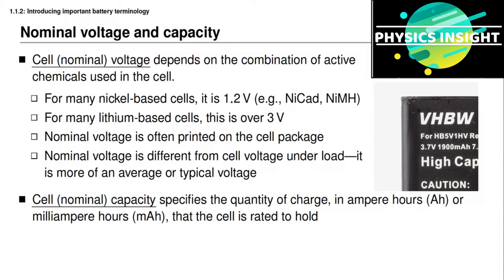For secondary battery cells, we usually consider them to have reached end of life when their capacity is only 70% of the original capacity — that is, when the cell has lost 30% of its capacity.